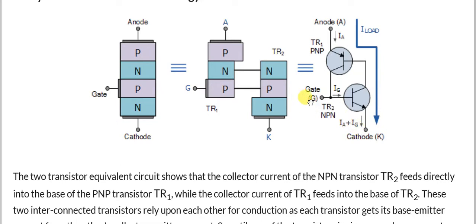When a proper trigger voltage — let's say positive — is applied to the gate, it forward biases the internal NPN junction. At that point, the load current Ia will pass all the way through, and even if the gate trigger is removed, the current will keep on flowing. Triggering means any process you start that carries on by itself — like firing a bullet that keeps going until stopped by an object. Once the SCR is triggered on, the load current can only be stopped by interrupting the main load circuit.